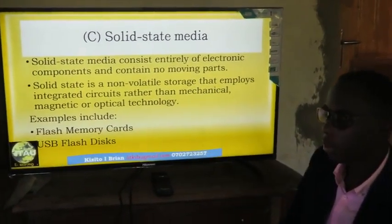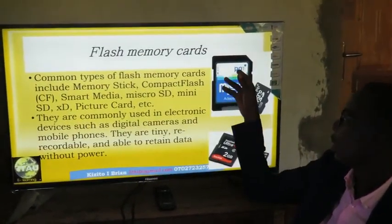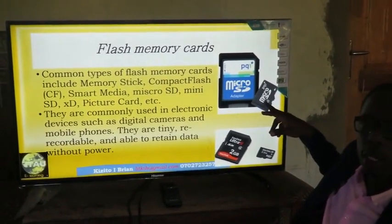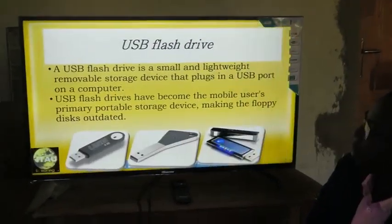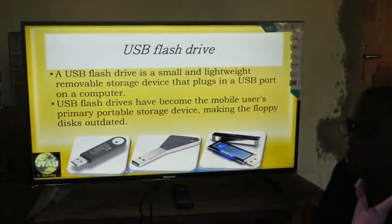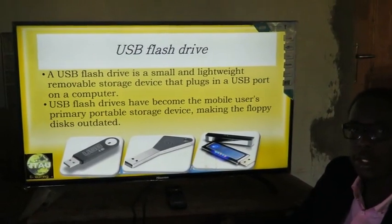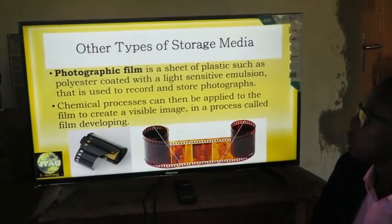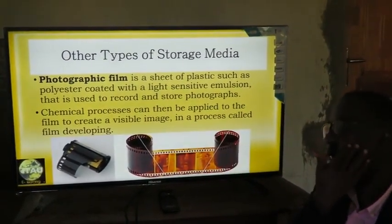Solid state storage media consist of entirely electronic components and contain no moving parts. Examples include memory cards, flash drives, and USB flash drives — the micro cards used in mobile phones and the cards used in video cameras. USB flash drives are small, lightweight, removable storage devices plugged into a USB port, and data can move from the flash to the CPU for use. Other storage media include photographic films used in ancient cameras.